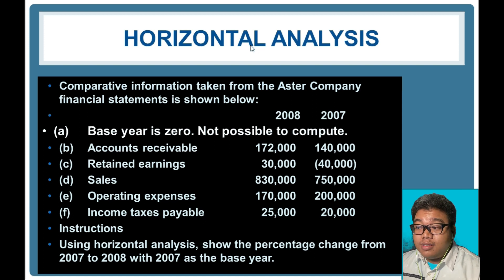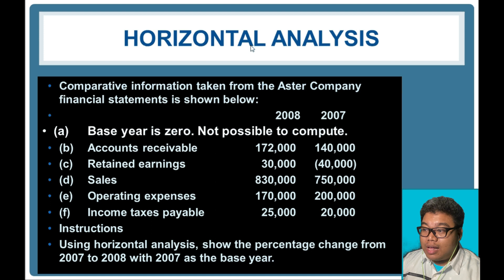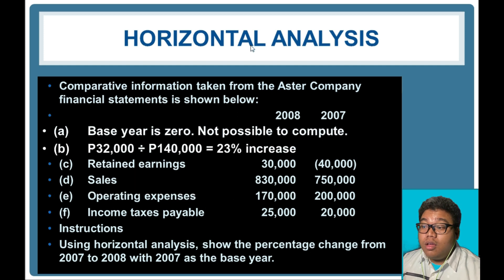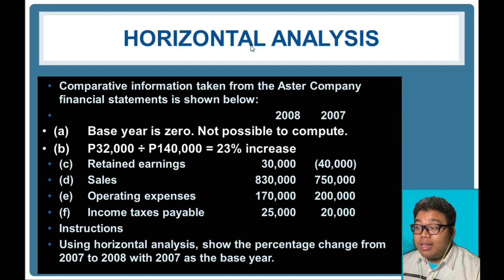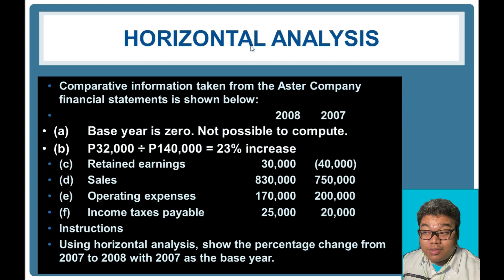For accounts receivable: 172,000 in 2008 and 140,000 in 2007. We compute 172,000 minus 140,000 divided by 140,000, giving a 23 percent increase. If the result is positive, it is an increase; if negative, it is a decrease. For retained earnings: from negative 40,000 it is now 30,000, so there is an increase of 70,000.